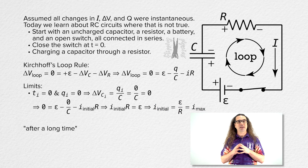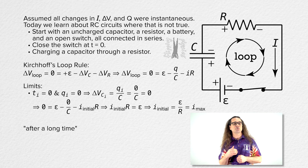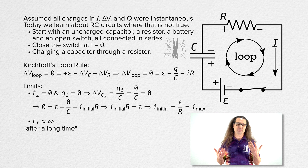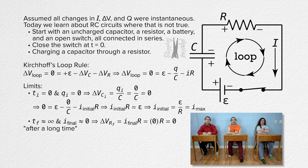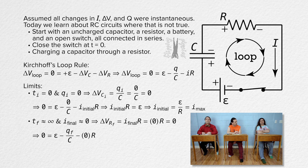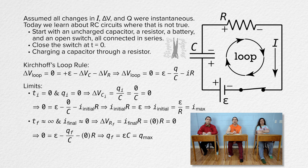Now let's look at the limit after a long time — in RC circuit parlance, time final is approximately infinity. The current starts at its maximum value and decreases the entire time, so after a long time the final current is roughly zero. That means the electric potential difference across the resistor also equals zero. Substituting a final current of zero into the loop equation shows that the final charge on the capacitor equals the EMF across the battery times the capacitance of the capacitor. Because charge has been increasing the whole time, the final charge is also the maximum charge on the capacitor.